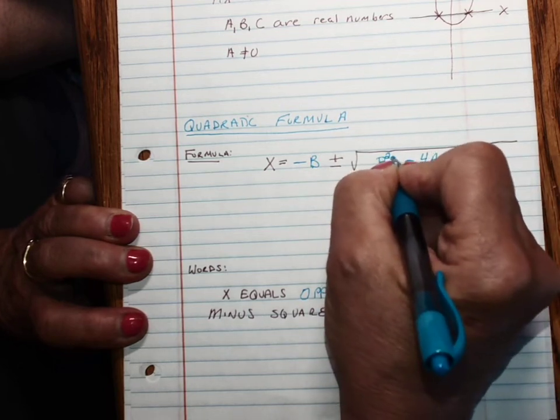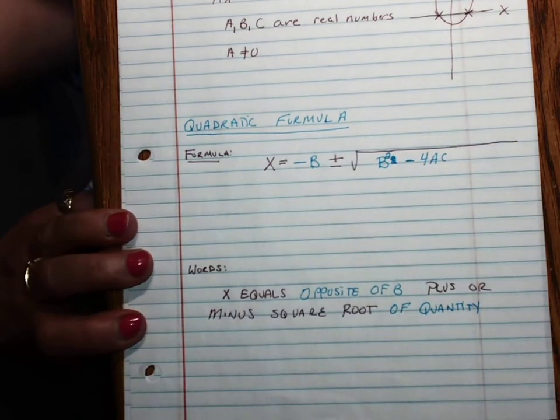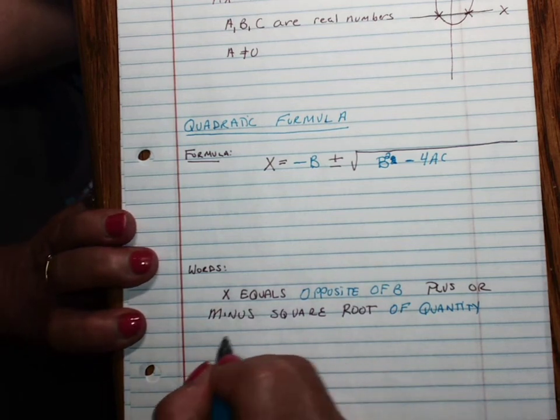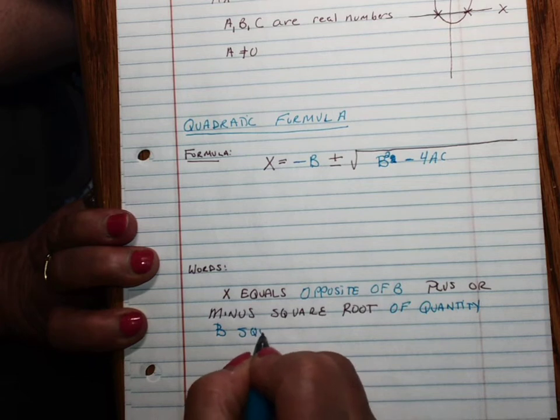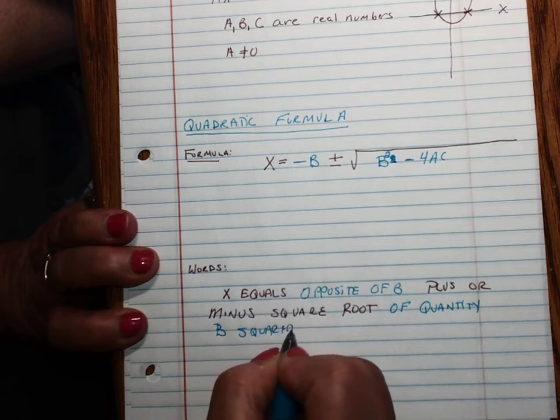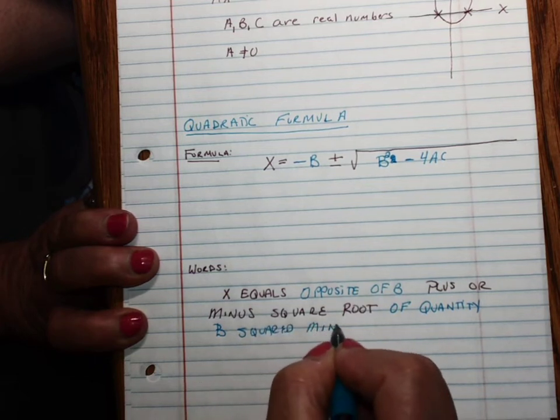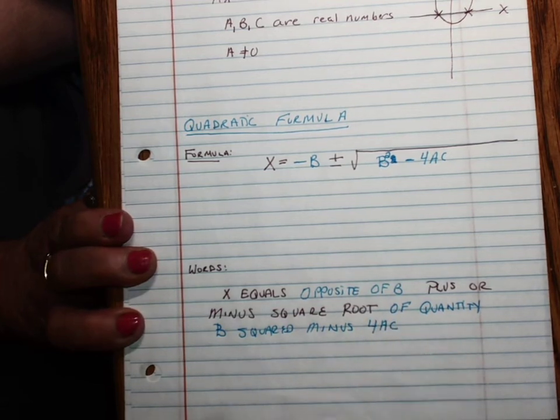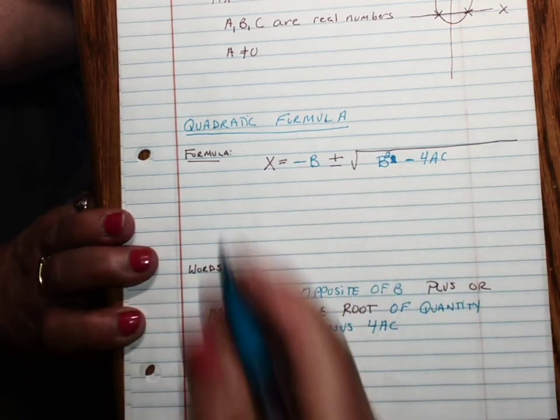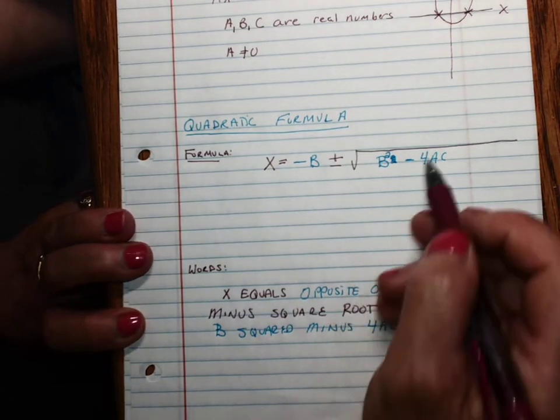Make sure it's b squared, quantity b squared minus 4ac. And you don't need parentheses around these variables.